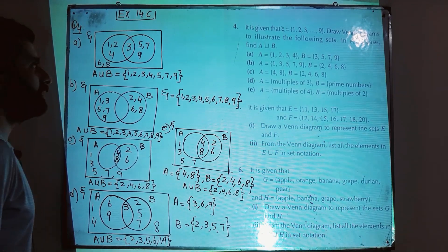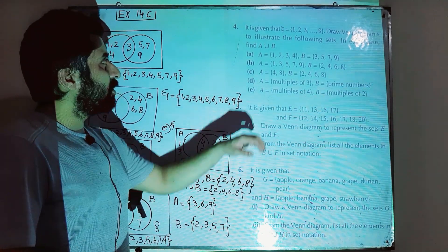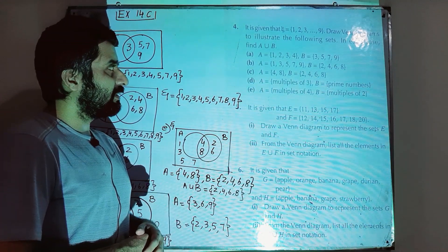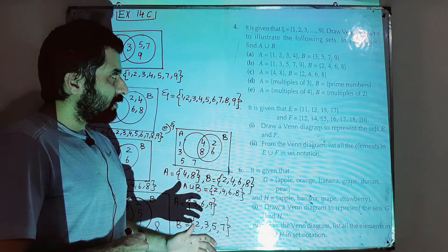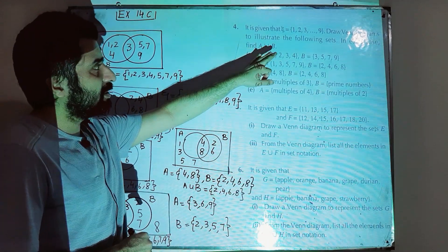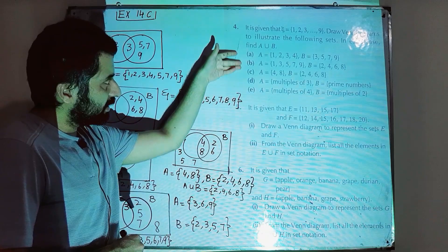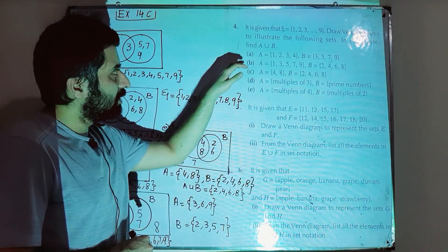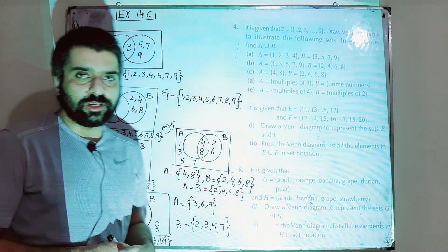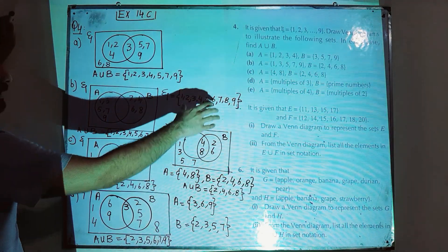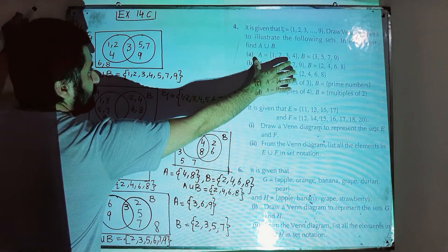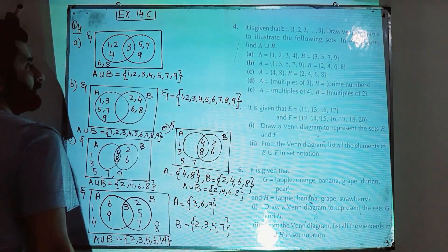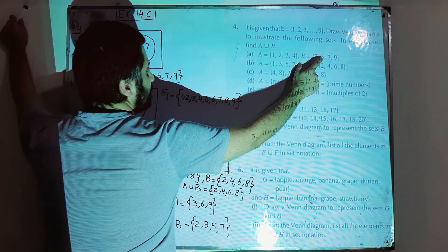In question number four of exercise 14c, we have a universal set from 1 to 9: {1,2,3,4,5,6,7,8,9}. We need to draw Venn diagrams to illustrate the following sets and in each case find A union B. Part a: set A = {1,2,3,4} and set B = {3,5,7,9}.